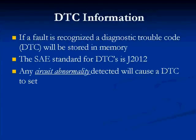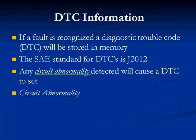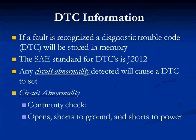If a fault is recognized, a DTC will be stored in memory. This is critical — what if it's not recognized? In our example, the P0106 would not be recognized because a P0107 or P0108 was set, blocking it. Many times people ask why didn't a trouble code set — the majority of the time it's because the enabling conditions weren't met. The SAE standard for DTCs is J2012 for OBD2. Any circuit anomaly detected will cause a DTC to set: circuit anomalies include a continuity check, open shorts to ground, and shorts to power.